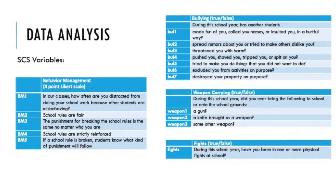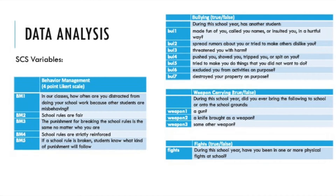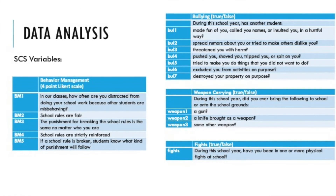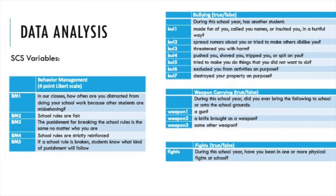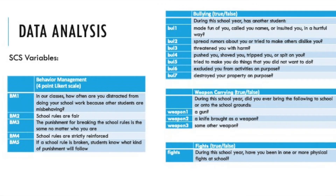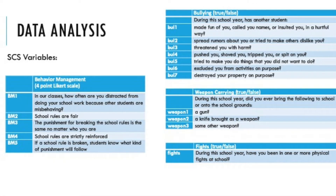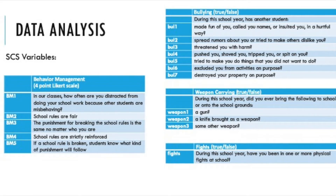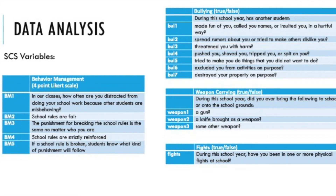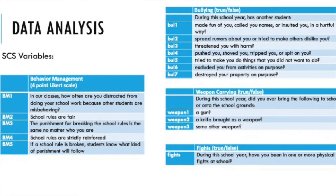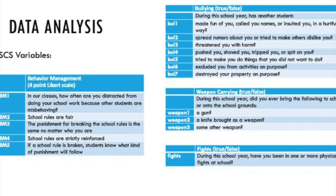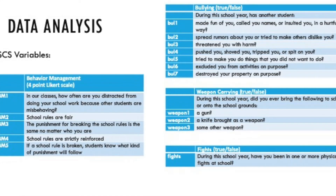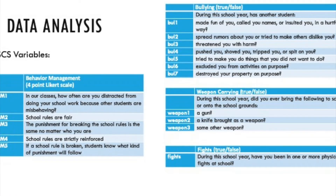Behavior management items, which are listed in the table on the left-hand side, refer to the frequency of student misbehavior and whether school rules were perceived as fair, were strictly reinforced, and the consequences for breaking the rules were known to students. Bullying items are listed in the table on the upper right corner and refer to different forms of verbal and physical victimization or exclusion from activities on purpose. Weapon carrying items inquired whether participants brought a gun, a knife, or some other weapon to school during the current school year. The other item asked students whether they engaged in one or more physical fights during the current school year. Behavior management items were on a four-point Likert scale, whereas bullying and weapon carrying items were binary.